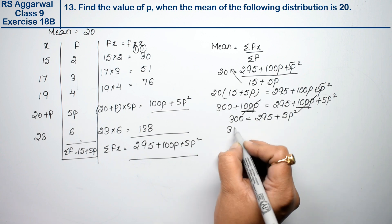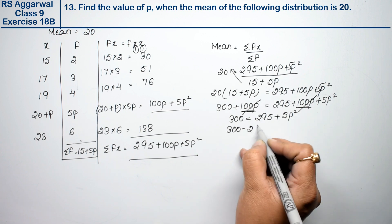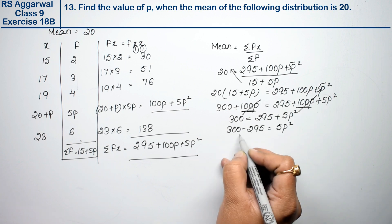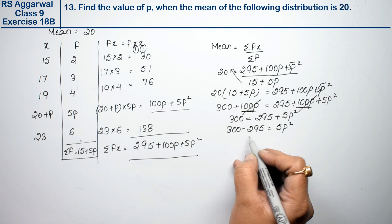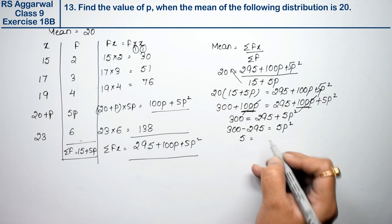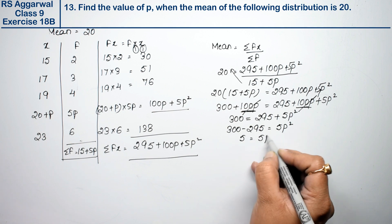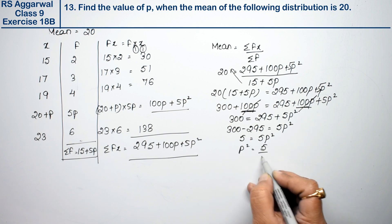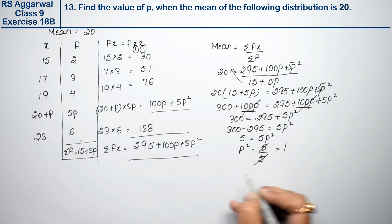5 equals 5p square. So p square equals 5 divided by 5, which equals 1. P square equals 1, so p equals square root of 1, which equals 1. That is the answer.